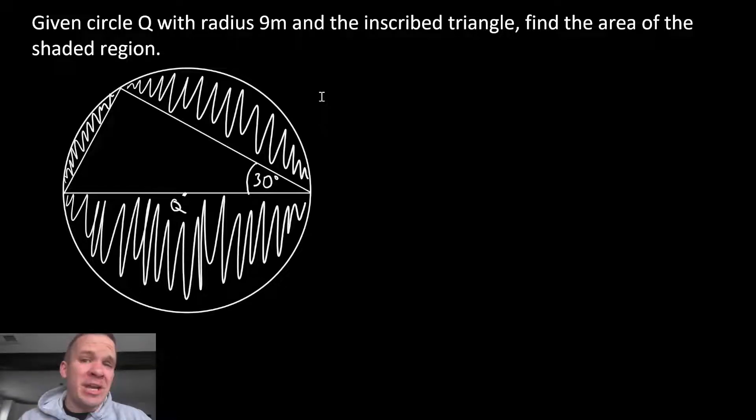What's up? Mr. Allen here, about to do a shaded region problem, and it's gonna be awesome! Given circle Q with radius 9 meters and the inscribed triangle, inscribed means that all three vertices lie on the circle, find the area of the shaded region.